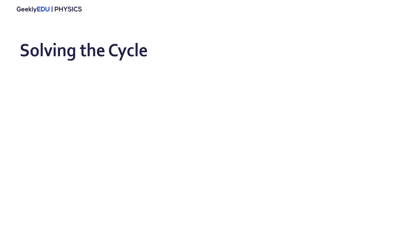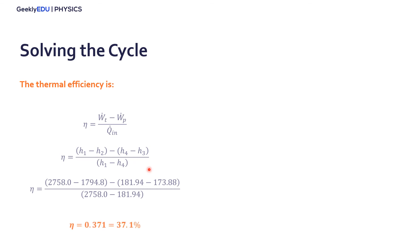Now it's easy. We just need to solve the cycle. So for the thermal efficiency, we have the thermal efficiency formula. We have all the enthalpies. So we just add the enthalpies here from states one, two, three, and four, and find a thermal efficiency of 37.1%.